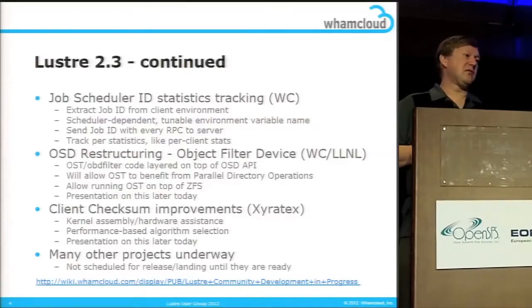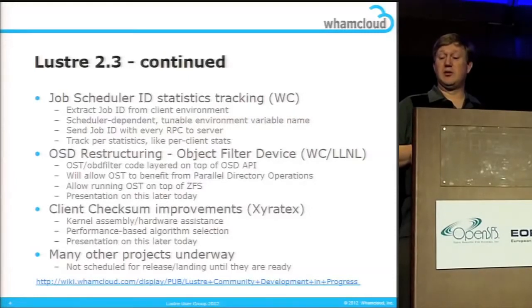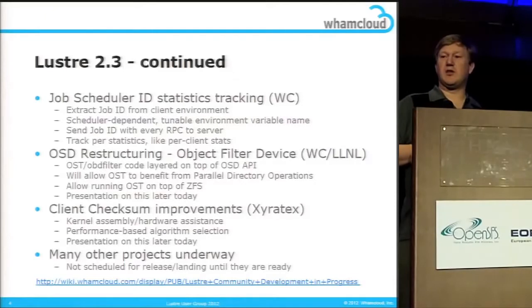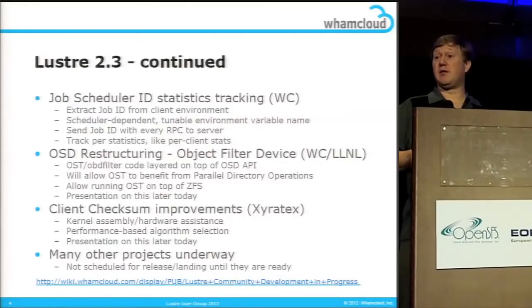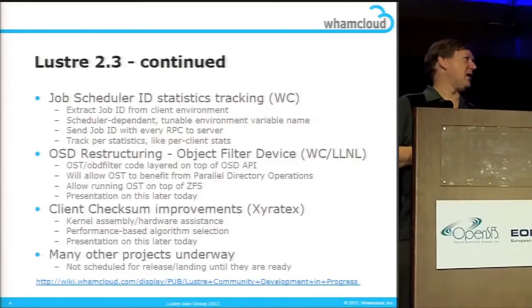Zyrtex has been working on improving client-side and server-side checksumming support. In Lustre 2.2 there was some improvement in the checksum algorithm to allow hardware assistance, but there's more infrastructure in the kernel we can leverage — assembly language checksum code and other improvements. This is also more platform-agnostic: the Lustre 2.2 code uses inline x86 assembly, but if you have a PowerPC you don't get the hardware assistance benefits. The kernel has already done all that work and we're taking advantage of it in 2.3.